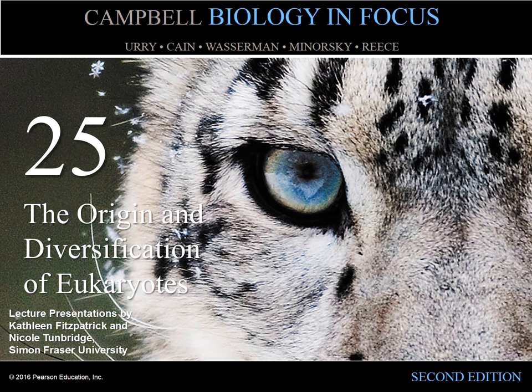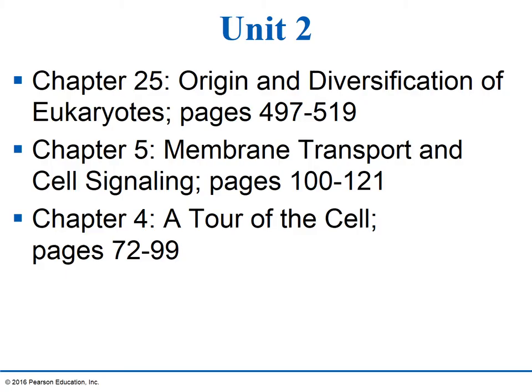Unit 2 of your general biology course will include an overview of the origins of eukaryotic cells beginning with chapter 25, then a closer look at the structure of eukaryotic cells as we progress to the plasma membrane, primarily covered in chapter 5, and then the major organelles and structure and function of the major organelles of the eukaryotic cell in chapter 4.